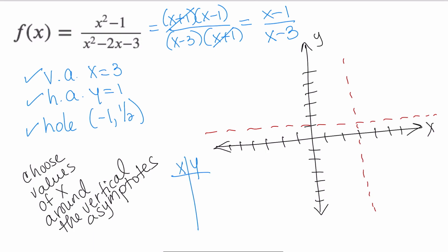I'm going to create a quick table of values where if my vertical asymptote is at x = 3, I'm going to pick numbers to the right and to the left. I'm not going to pick three numbers to the right and to the left.